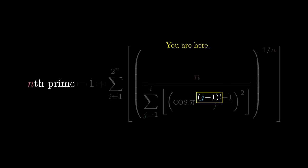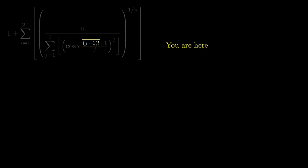The innermost piece is j minus 1 factorial. For example, when j is 5, this is 1 times 2 times 3 times 4, which is 24. Then Willans tells us to add 1 and divide by j. When we do this for j equals 5, we get 5.